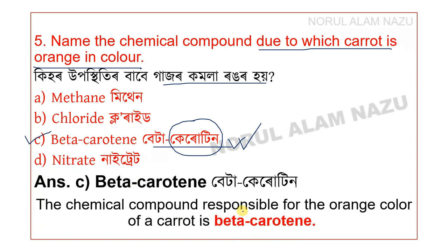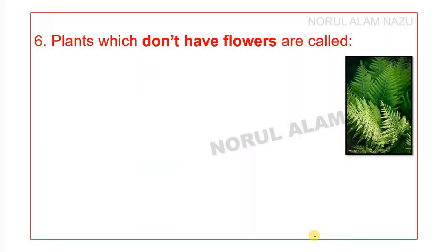The chemical compound responsible for the orange color in a carrot is beta-carotene. Next question: plants which do not have flowers are called?